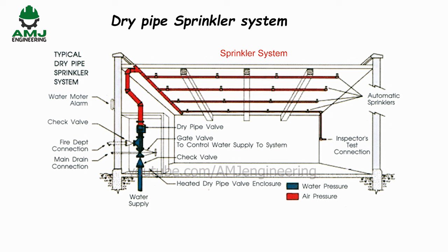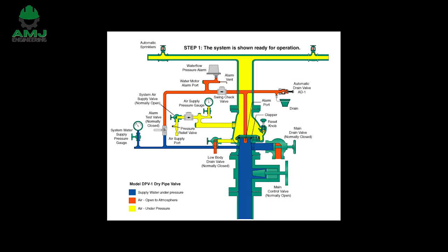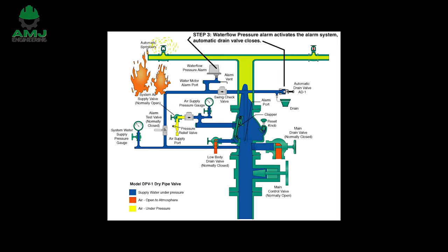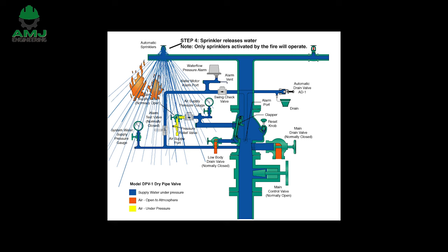Dry pipe fire sprinkler systems are very similar to wet pipe systems with one major difference: the pipe is not constantly filled with water. Instead, the water is held behind a dry pipe valve, usually some distance away from where the sprinklers are located. When the temperature at the ceiling becomes hot enough, the glass bulb or fusible link breaks. However, water isn't immediately available because the pipe is not water-filled. Air is released from the now-open sprinkler head, creating a drop in pressure causing the dry pipe valve to open and water to fill the system, then flow from the open sprinkler head.